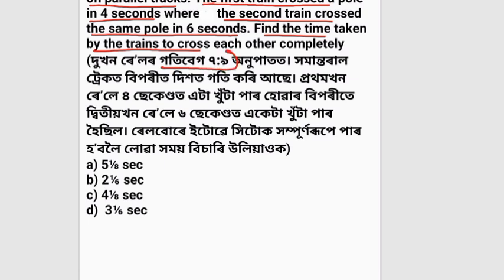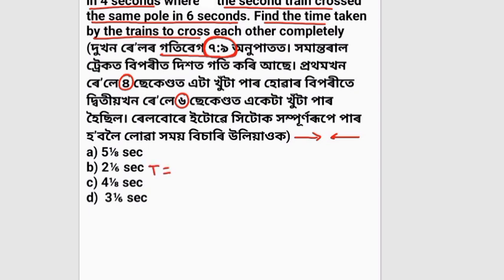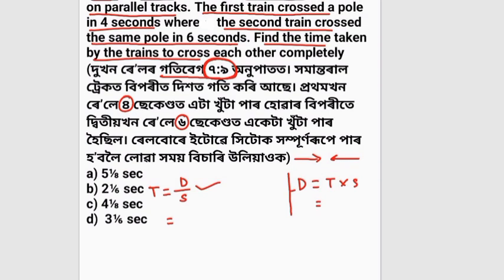The speeds are in ratio 7 to 9. Since speed equals distance divided by time, and each train crosses a pole, the lengths are proportional to speed × time. First train length = 7k × 4 = 28k. Second train length = 9k × 6 = 54k. Total distance to cross = 28 + 54.